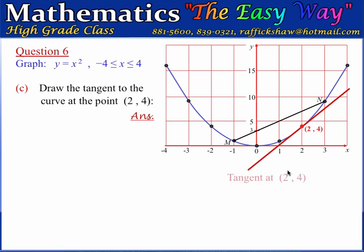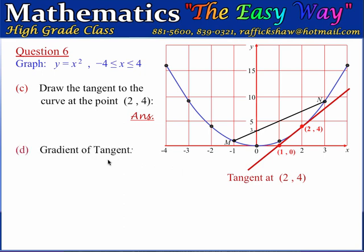The tangent at the point (2, 4) is drawn such that it touches the curve at that point, and the tangent and the curve have the same gradient at that point — the same direction. We also observe that this tangent passes through the point (1, 0), which we can mark on the diagram. The next part wants us to calculate the gradient of the tangent.